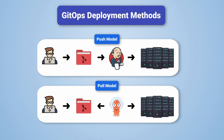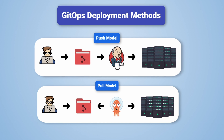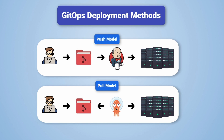The first method, where the engineer manually applied the change, is known as the push-based model. To make it GitOps, we would simply need to automate the last step of applying the new code. This can be done with any type of CI/CD service like Jenkins, GitHub Actions, or GitLab. Once the code is checked into Git and the CI tests have passed, the new infrastructure is pushed. The second method, where there is an operator or agent installed in the environment, is known as the pull model. The agent constantly checks the current state of the environment, and if it ever doesn't match the desired state, it pulls the required changes.